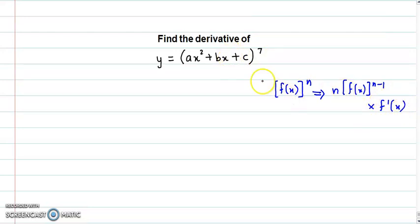So here we need to apply the chain rule. And here f(x) is ax² + bx + c, this is f(x) and this is n. So applying the chain rule,